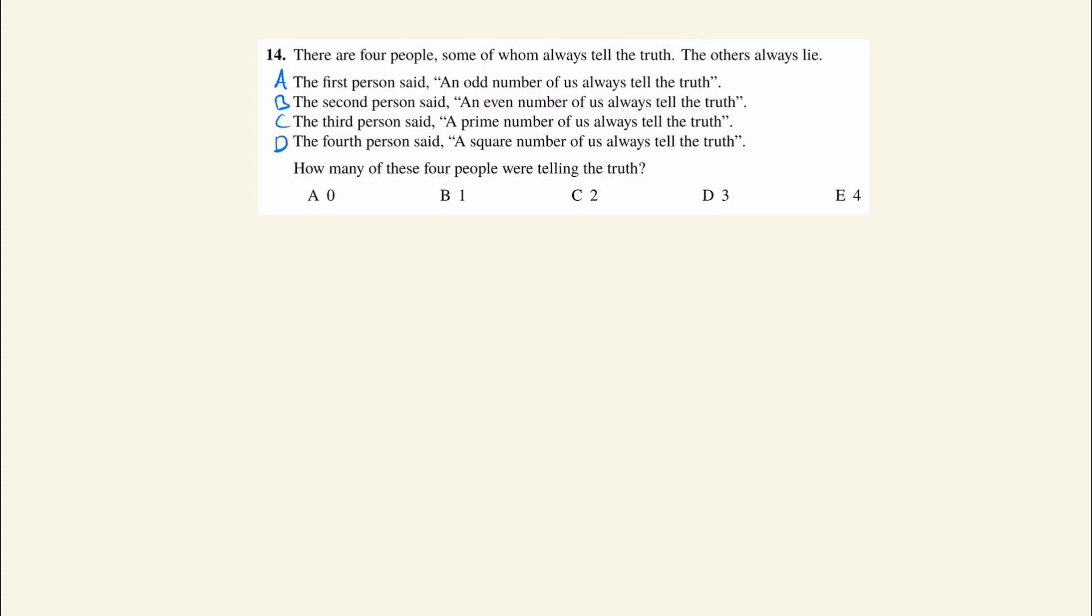We'll assume they're all telling the truth. If A were telling the truth, that would be either one or three people. If B were telling the truth, that would be either zero, two, or four people. If C were telling the truth, that would be either two or three people.